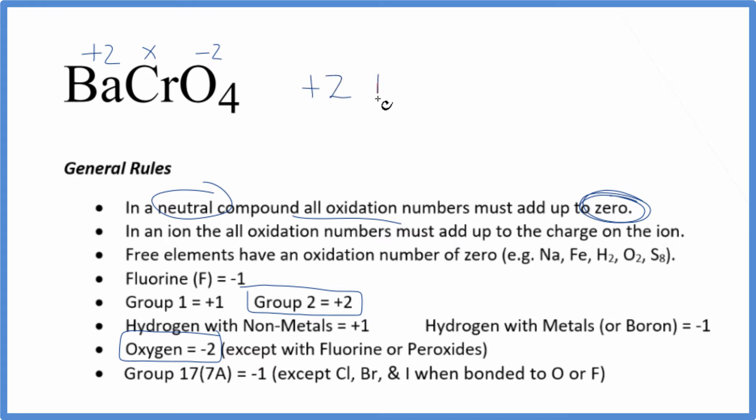Plus 2 plus X. 4 times minus 2 is minus 8. All of that equals zero. So we have X minus 6 equals zero. Add 6 to both sides. X equals a positive 6.